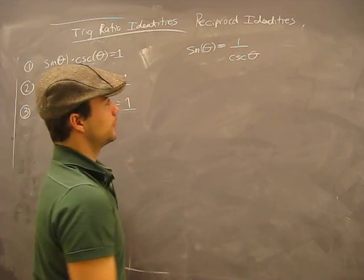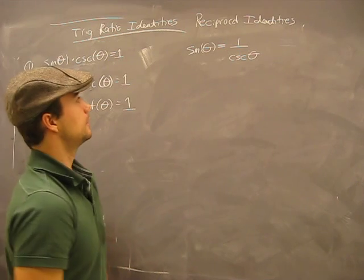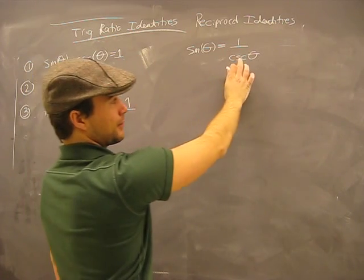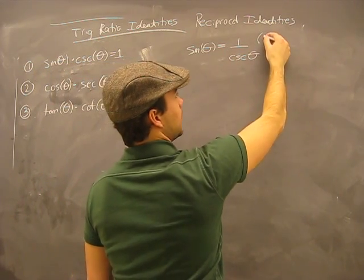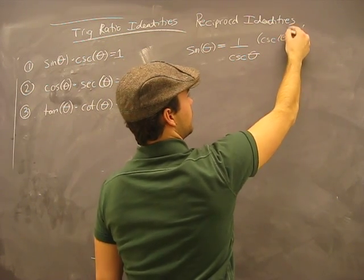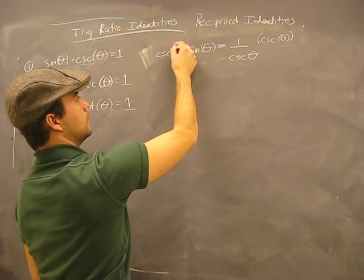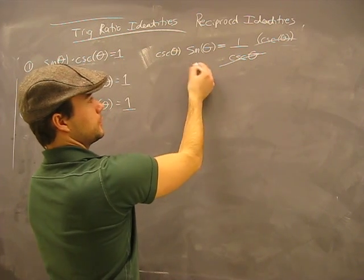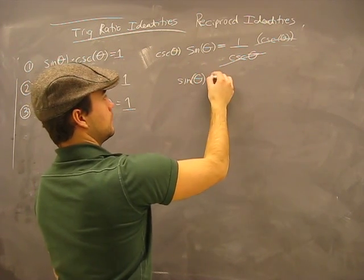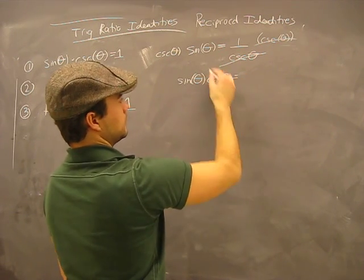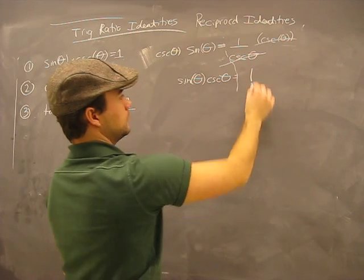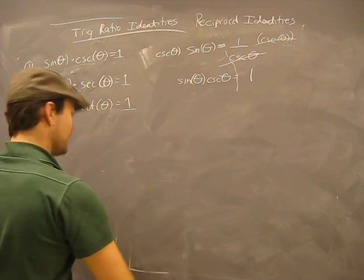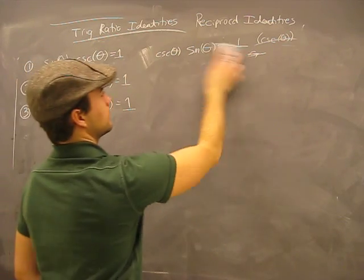Back in grade 7, we learned what you do to one side, you do to the other. If I want a 1 on the right side, I'm going to multiply the top by cosecant theta on both sides. Canceling, canceling — tada! I'll just switch the order: sine theta times cosecant theta equals 1. Just that easy — grade 7 math. So we prove the first one.